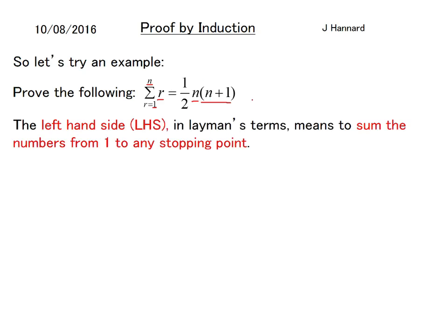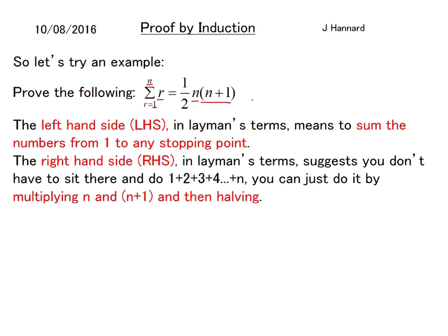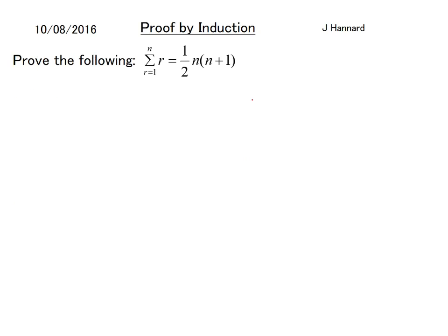The left hand side means to sum up the numbers from 1 to any stopping point. The right hand side suggests that you don't have to sit there and do 1 plus 2 plus 3 plus 4 all the way up to plus n. You can just do it by multiplying n and n plus 1 and then halving the answer. So that's a very powerful piece of maths there.